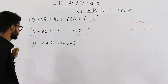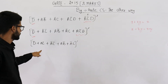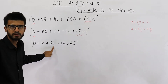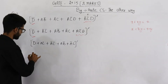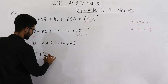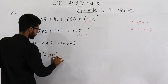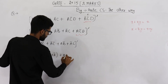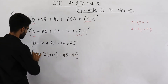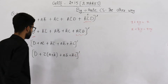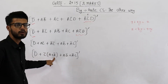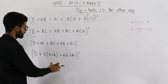Now let's see what can be done. From these two terms, c complement can be taken common. So we have d complement plus c complement times (a + ā + ab̄ + āc). And we have a whole complement. Now, a + a complement is 1, so that term can be erased.